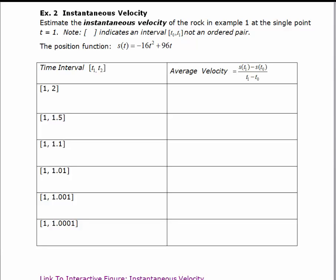We ended the last video by asking the question, what is the actual velocity at t equals 1? When we're looking for velocity over an interval, we call it average velocity. But when we're looking for the velocity at a specific point in time, we call that instantaneous velocity.